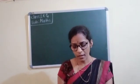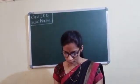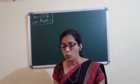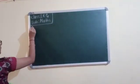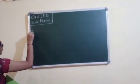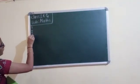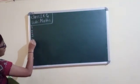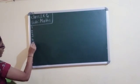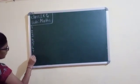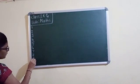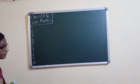Okay children, I will write here 1 to 30 numbers. First I will write 1 to 30 numbers: 1, 2, 3, 4, 5, 6, 7, 8, 9, 10.